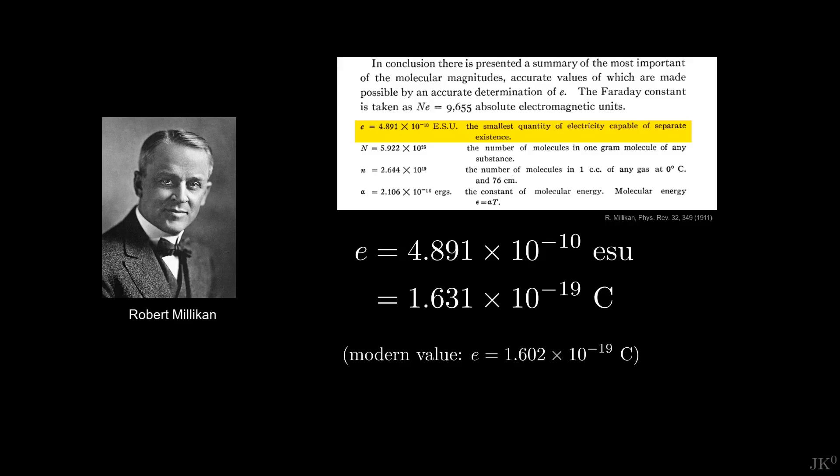During the same period, Robert Millikan became the most renowned experimental physicist in the United States after his remarkably precise measurement of the electron's charge. He was a controversial character, quite arrogant, influential, and politically powerful.